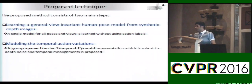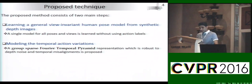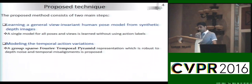To overcome these drawbacks, we propose a depth video-based cross-view action recognition which consists of two main steps. The first step is learning a general view-invariant human pose model from synthetic depth images, where a single deep CNN model for all poses and views is learned without using action labels. The second step is modeling the temporal action variation, where a group sparse Fourier temporal pyramid is proposed which is robust to noisy depth images and temporal misalignment.